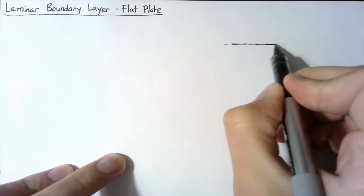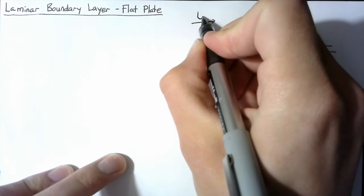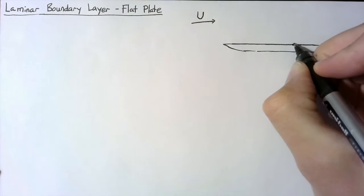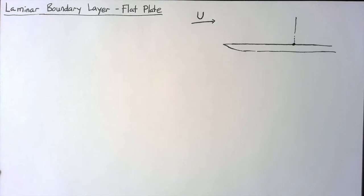In external flow, the vast majority of the flow field is going to be a constant velocity, which we usually call the far field velocity, or U. But we still need to enact our no-slip condition on the surface, which means that at each point on the airfoil, the velocity has to be equal to zero.